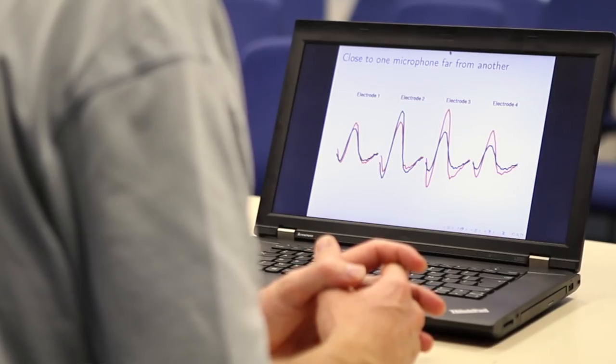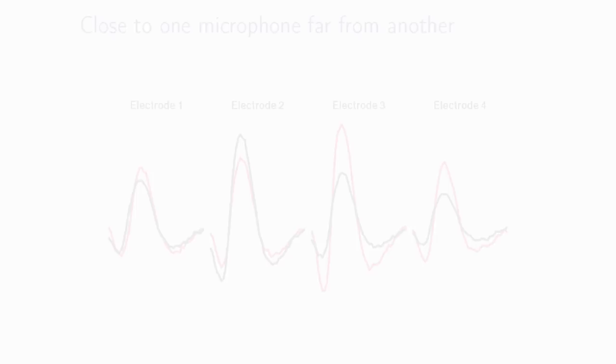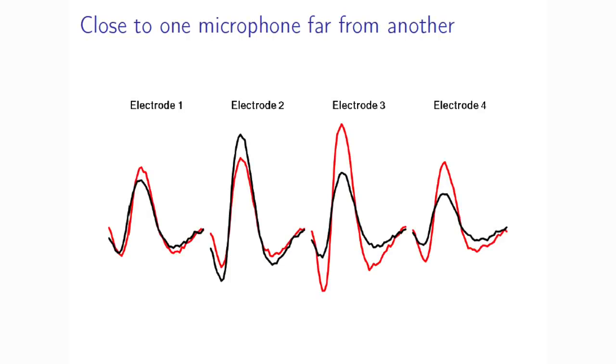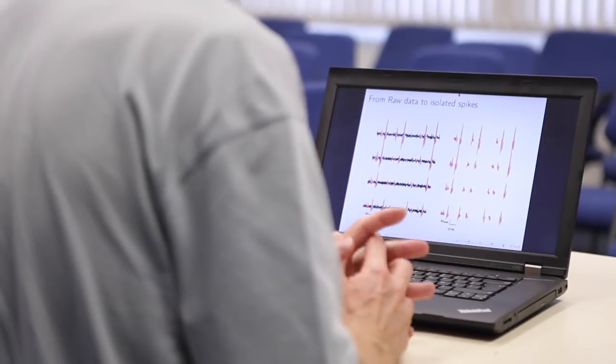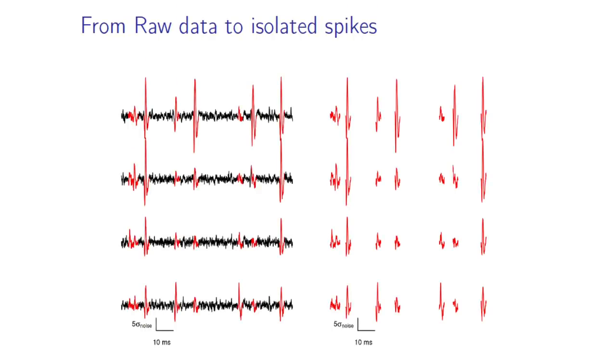Another feature we could use is the fact that one person will be sitting close to a microphone and away from the others, and will therefore generate a much stronger signal on the close microphone and a weak signal on the other microphones. Another person will be sitting just at the opposite side of the room, generating a large signal on the far away microphone and a weak signal on the close microphone with respect to the first person. Exactly the same for the neurons. We'll have spikes with a large amplitude on one electrode and a weaker amplitude on the other electrodes, and vice versa, as illustrated here with the black and red spike.